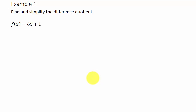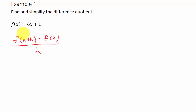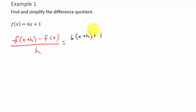Find and simplify the difference quotient. Let's write it down: f of x plus h minus f of x, all divided by h. First, let's find f of x plus h. We're going to take x plus h and plug it into the function in place of x. So we have 6 times x, and in the place of x we put x plus h, plus 1. Then minus f of x — well, f of x is 6x plus 1.